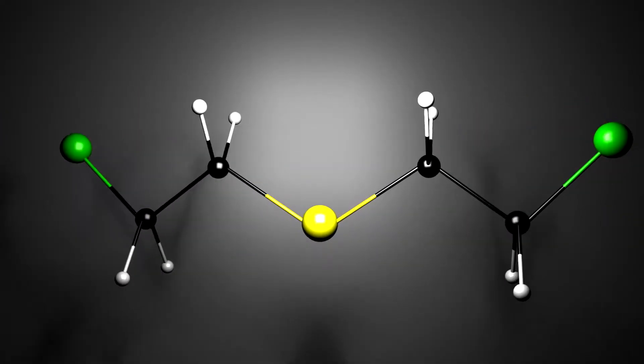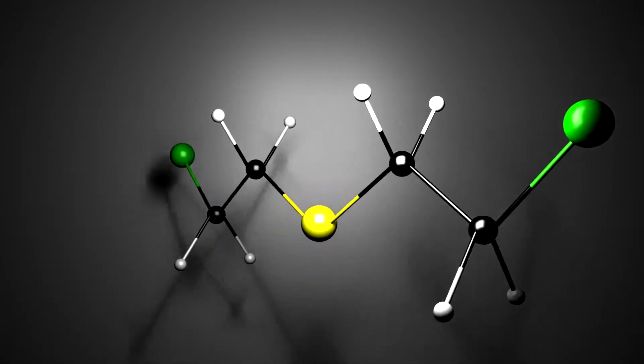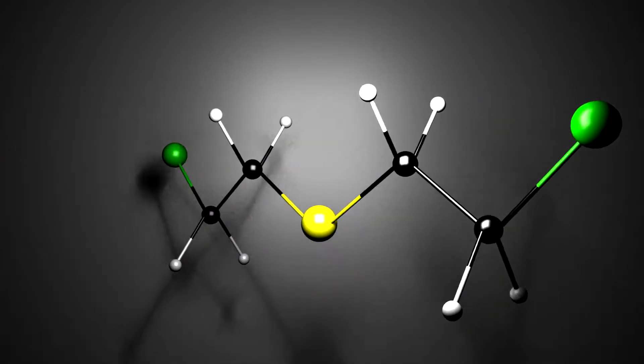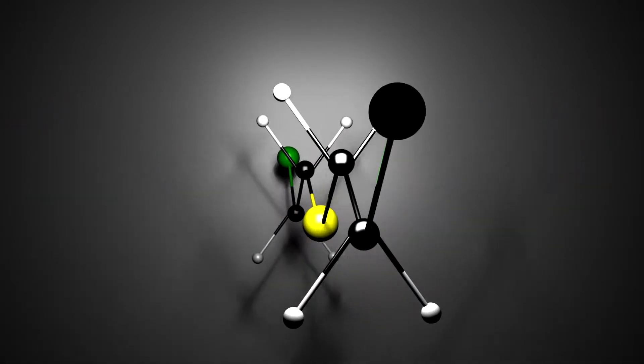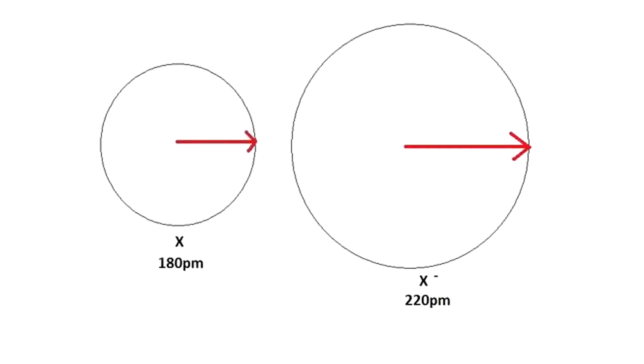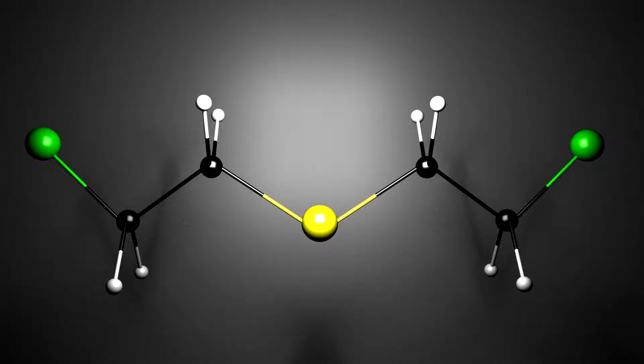This one obviously shows the molecule in a three-dimensional space, unlike the other two models which showed only in a two-dimensional space. It once again portrays the bond lengths and angles from the skeletal structure, but this time for all the atoms. This and the Lewis dot structure are the only ones to show all the atoms and therefore, give a better understanding of the structure as a whole. It is also the only one that shows the relative atomic radii. By doing this, it gives the best representation of the geometry, shape, and size of sulfur mustard.